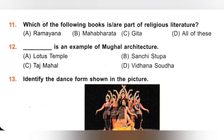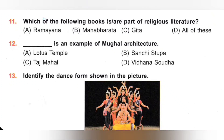11th. Which of the following books are part of religious literature? A. Ramayana, B. Mahabharata, C. Gita, D. All of these. Ramayana, Mahabharata and Bhagavad Gita are all part of religious literature. The correct answer is option D, All of these.